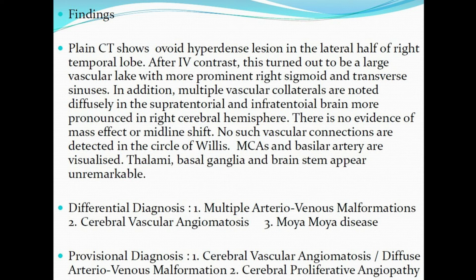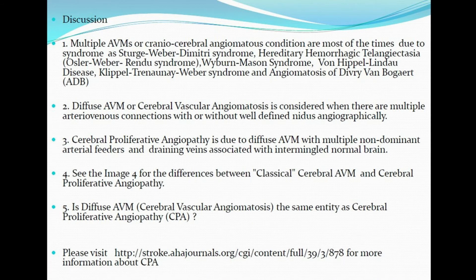In discussion, the associated syndromes with multiple AVMs or cranio-cerebral angiomas are: one, Sturge-Weber-Dimitri syndrome; two, hereditary hemorrhagic telangiectasia or Osler-Weber-Rendu syndrome; three, Wyburn-Mason syndrome; four, von Hippel-Lindau disease; five, Klippel-Trénaunay-Weber syndrome; six, angiomatosis of Divry-Van Bogaert syndrome.